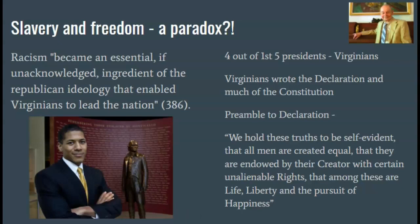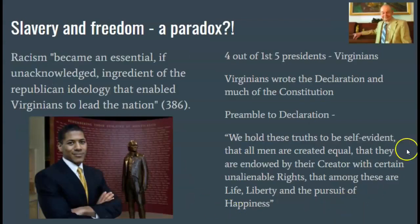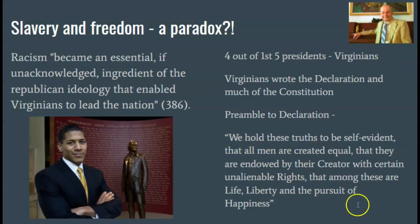But what Edmund Morgan argues — and what Zinn says in Chapter 3 — is: what if it's not a paradox? What if racism actually was an essential, if unacknowledged, ingredient in the ideology that Thomas Jefferson had when he wrote this? Maybe the color line, which we talked about last week, was necessary for Thomas Jefferson to be able to conceive of this kind of idea. Maybe when he imagined 'all men,' he was really imagining white men who had a certain amount of money and owned their own property.